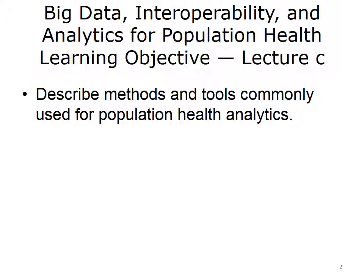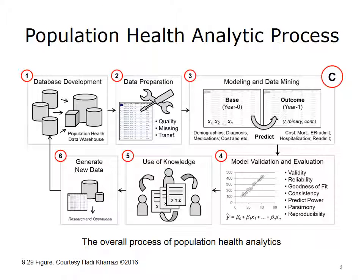This lecture discusses the common approaches used by population health analysts. This diagram shows the overall steps involved in developing analytics for population health management and risk stratification. As shown in Box 1, the first stage involves the merging of various data sets and developing a centralized or distributed population health data warehouse. The second step, depicted by Box 2, includes various processes to prepare the data for analysis, such as fixing data quality issues, deleting or imputing the missing data, and transforming the data to meet the assumptions of a given analytical approach.